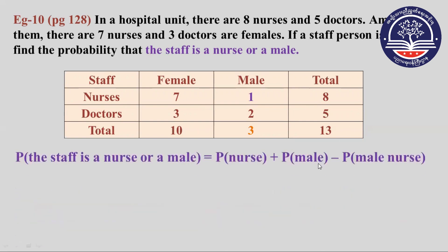The probability that the staff is a nurse or a male equals the probability of nurse plus the probability of male minus the probability of male nurse.